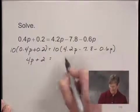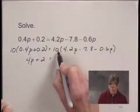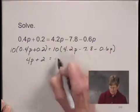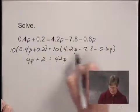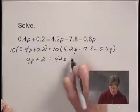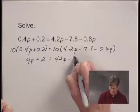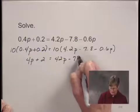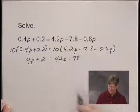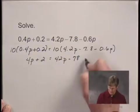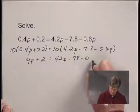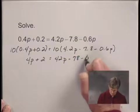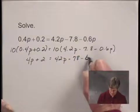And doing the same kind of thing on the right hand side, 10 times 4.2p is 42p. 10 times 7.8 is 78, so I have minus 78. And 10 times 0.6p gives me 6p, so I have minus 6p.